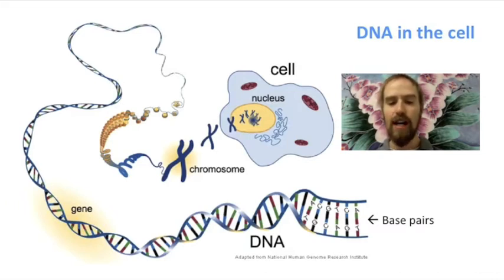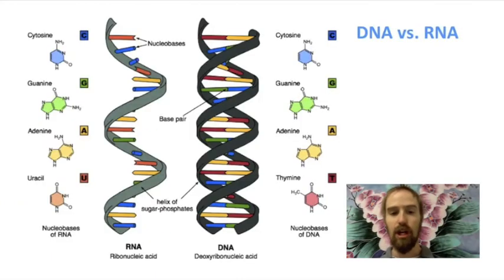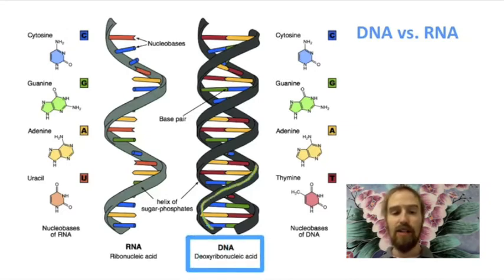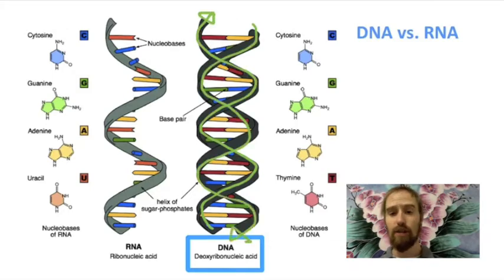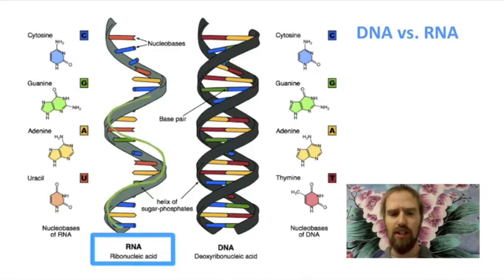Like DNA, RNA is a nucleic acid, and in many ways it is very similar to DNA, but there are some notable and important differences as well. DNA is a double-stranded molecule, and these strands are anti-parallel because they run in opposite directions. Unlike DNA, RNA is a single-stranded molecule, but just like DNA, it is coiled into a helix — just a single helix instead of a double helix.